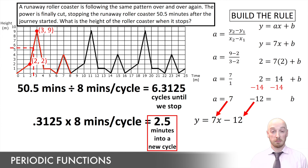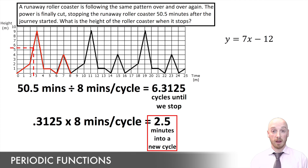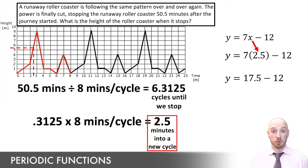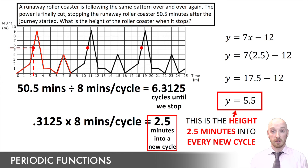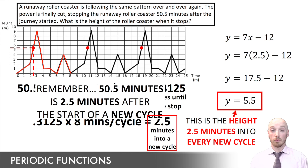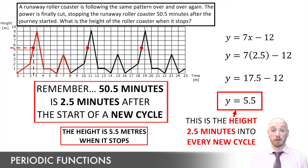The whole point of finding that rule was to determine the y value when x = 2.5. Plugging in: 7 times 2.5 gives 17.5, and subtracting 12 gives y = 5.5. This means 2.5 minutes after the start of every cycle, the rollercoaster is at a height of exactly 5.5 meters. Since 50.5 minutes after the start was exactly 2.5 minutes into the start of a new cycle, our answer is that the height of the rollercoaster at 50.5 minutes is exactly 5.5 meters.